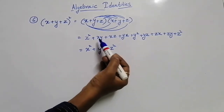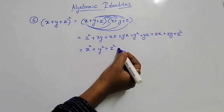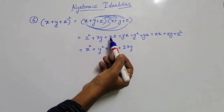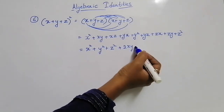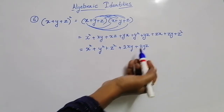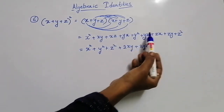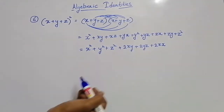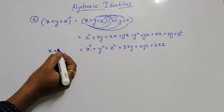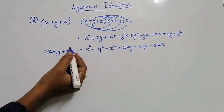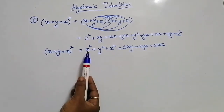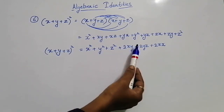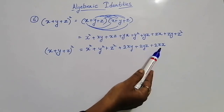Now observe the like terms, students. Here one xy is there, one xy is there — total two xys are there. And again one yz is there, another yz is there — two yzs are there. And the next like term is xz and zx, both are same — plus two zx are there. So the formula for x plus y plus z whole square is equal to x square plus y square plus z square plus 2xy plus 2yz plus 2zx.